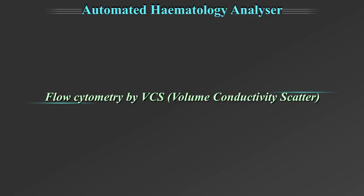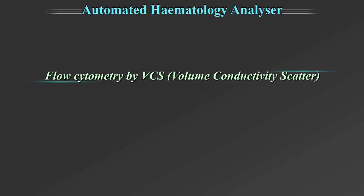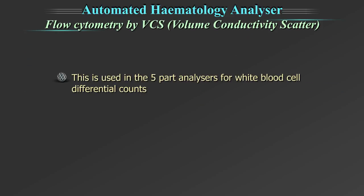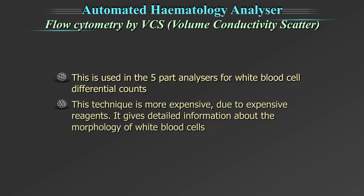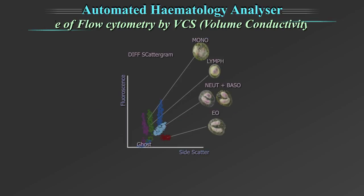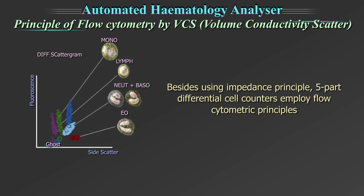The third technology is flow cytometry by volume conductivity scatter, or fluorescent flow cytometry. This is used in the five-part analyzer for white blood cell differential counts. This technique is more expensive due to the expensive reagents, but gives detailed information about the morphology of white blood cells. Besides using the impedance principle, five-part differential cell counters also employ flow cytometric principles.